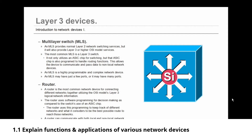Now let's move on to layer three devices. First up is the multi-layer switch. A multi-layer switch provides normal layer two network switching services but will also provide layer three or higher OSI model services. The most common multi-layer switch is a layer three switch — it not only utilizes an ASIC chip for switching, but that ASIC chip is also programmed to handle routing functions. This allows the device to communicate and pass data to non-local network devices. Multi-layer switches are not very common in small office/home office networks because they are very expensive.